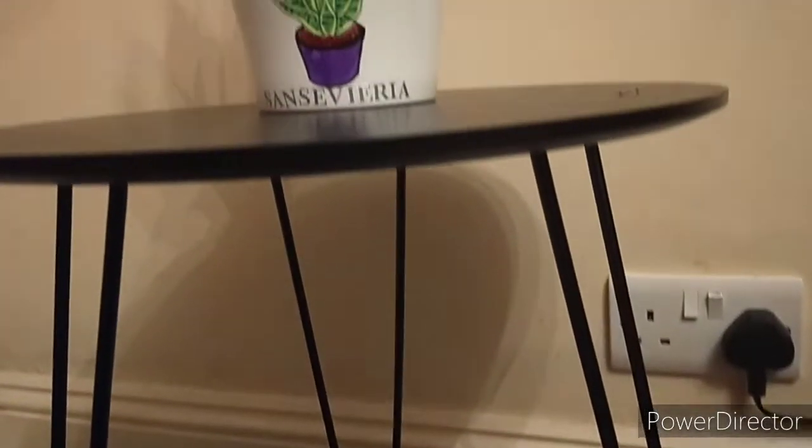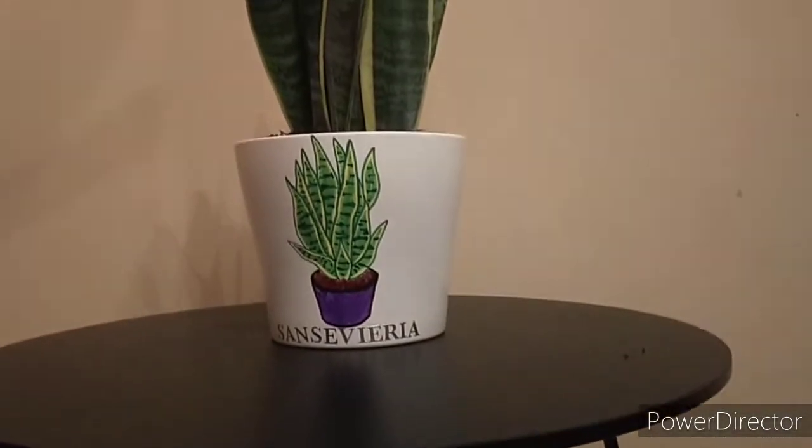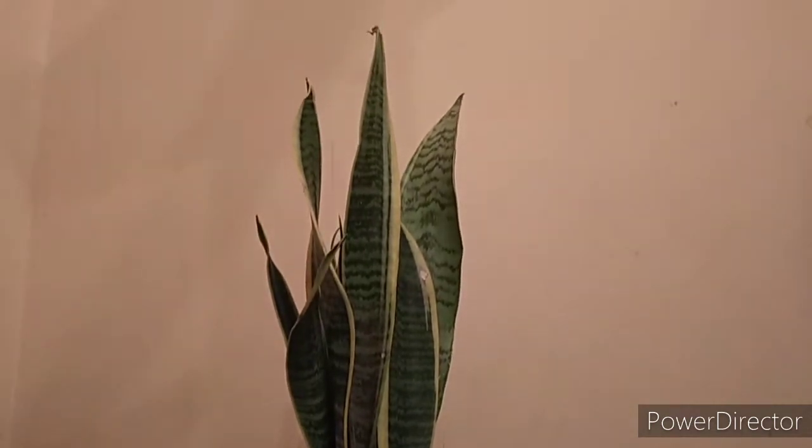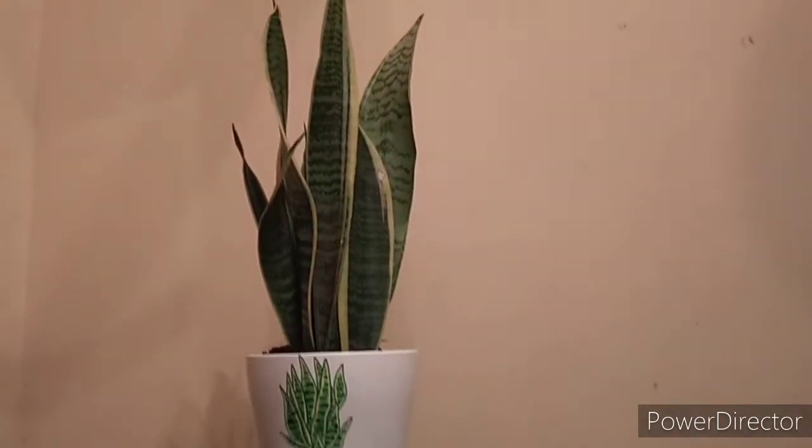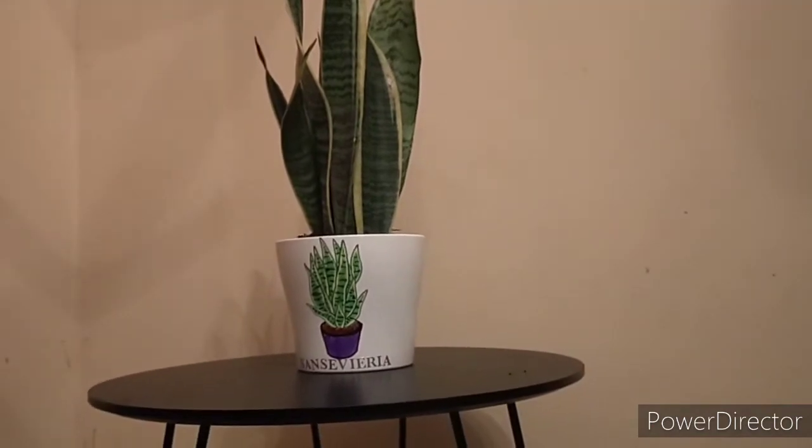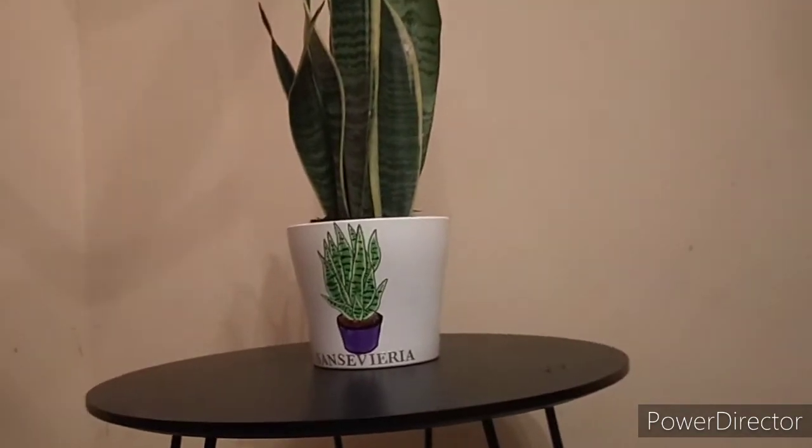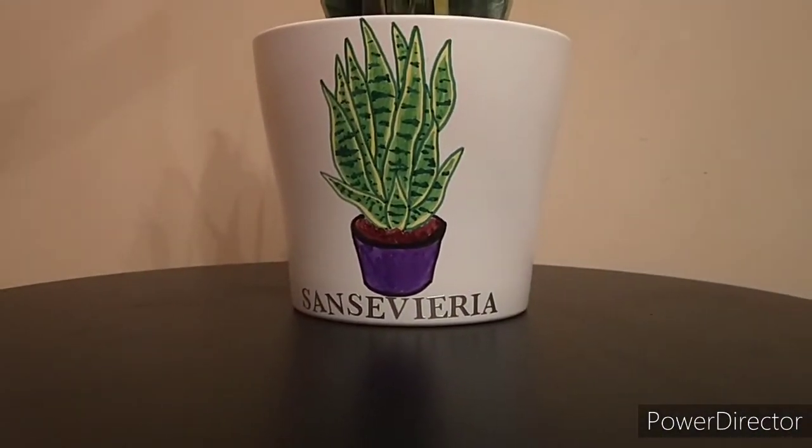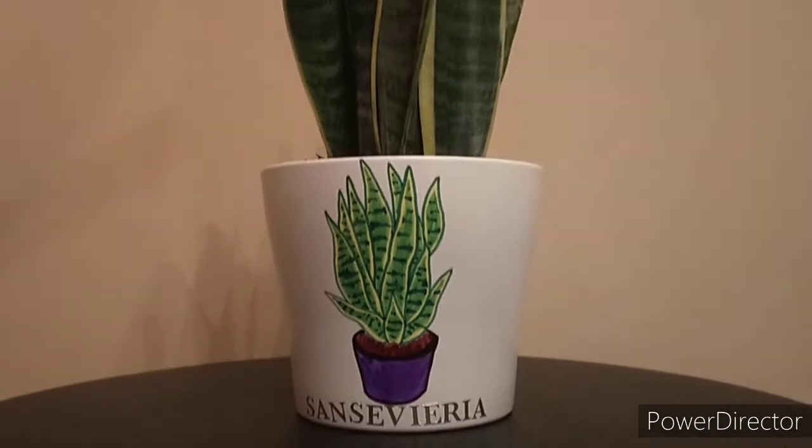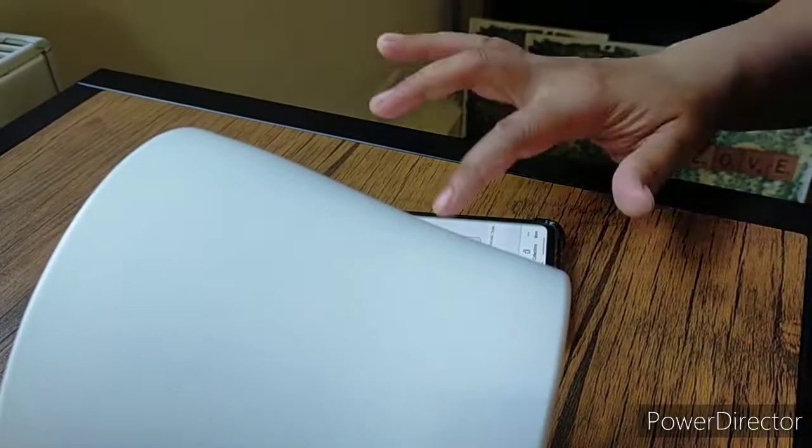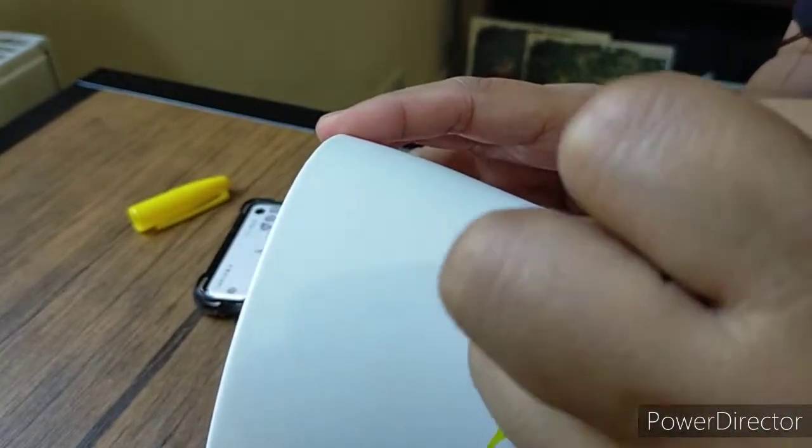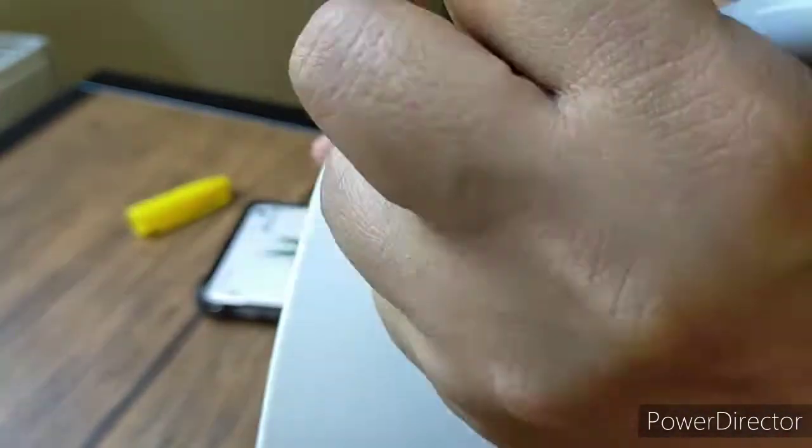Hi everyone, welcome back to our channel mylulila. In today's episode I am decorating this white pot that I bought from Wilco. I also bought this plant, the Sansevieria plant or commonly known as the snake plant. The pens that I used to color this design are the sharpie markers. I got the design from Pinterest and I use the yellow marker to draw the outline.